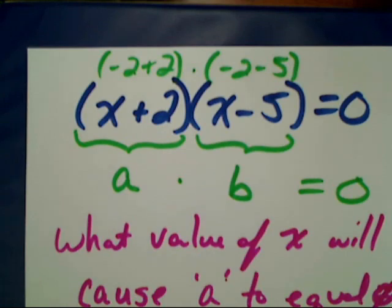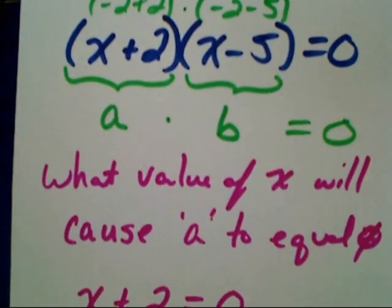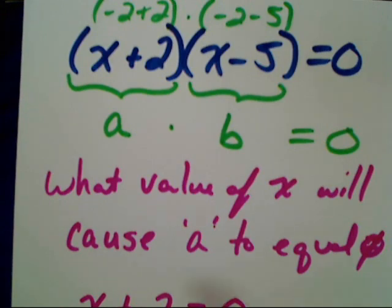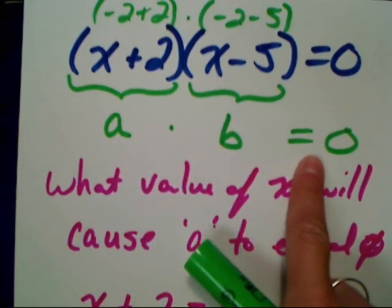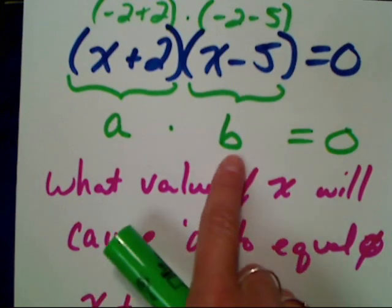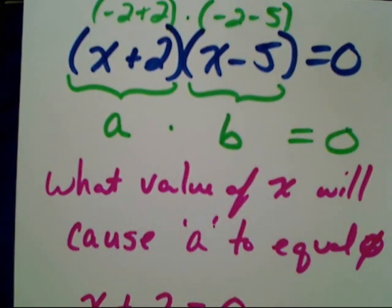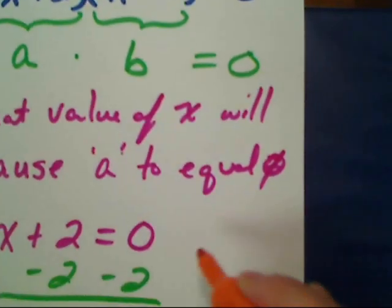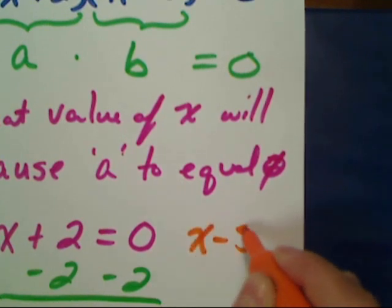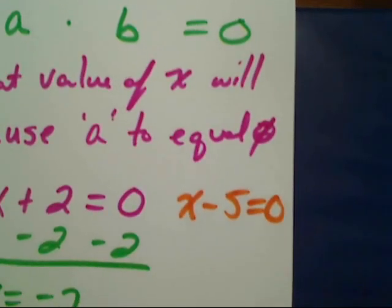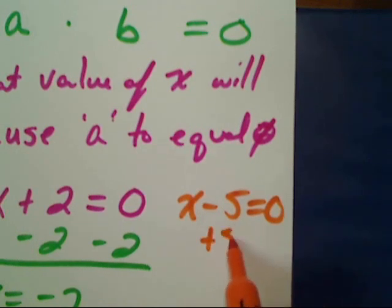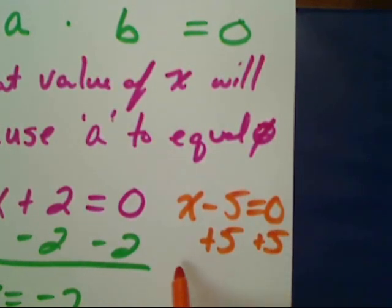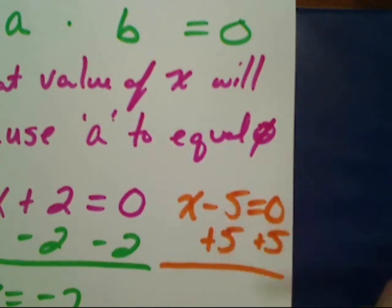But it's not the only solution! The property says that if I have a product A times B equal to zero, either A is zero — as we just found — or B is. So what's going to cause (x − 5) to be zero? Set that equal to zero to find your second solution: x − 5 = 0. To get X alone, you add five. Whatever you do to one side, you do to the other, so we end up with X equals five.